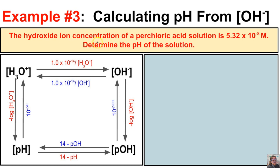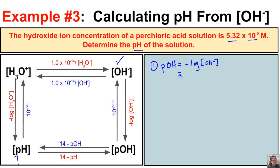In this third example, the hydroxide ion concentration of a perchloric acid solution is 5.32×10⁻⁸ moles per liter, and we need to determine the pH. We know the hydroxide ion concentration, and in the first step we find the pOH by taking the negative log of the OH⁻ concentration: −log(5.32×10⁻⁸) = 7.27.